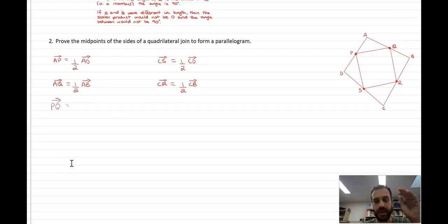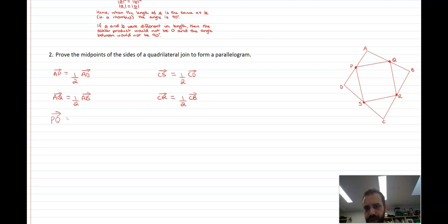Next little step here is to express PQ in terms of the vectors that we have up here. I can say that vector PQ is equal to vector PA plus AQ. PA plus AQ. And I can say that vector PA is equal to negative vector AP. So I've got a vector PQ there.